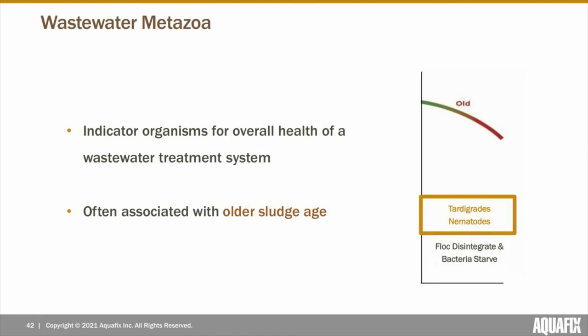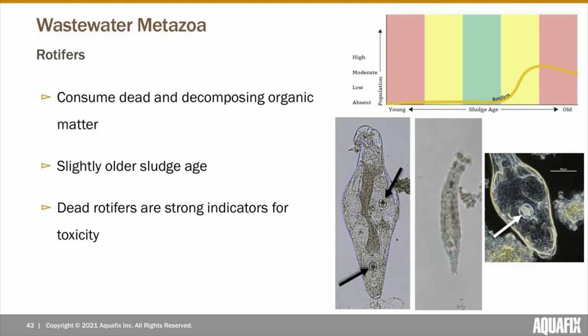In comparison to protozoa, metazoa are more complex but still used as indicators for overall health. They're often associated with older sludge ages because they have a slower growth and development period. Rotifers are a diverse type of metazoa that come in many shapes and sizes. Some rotifers have a funnel-like structure with cilia on the front of their body that resembles rapidly revolving wheels. Rotifers feed on dead and decomposing matter, as well as bacteria, algae, and smaller protozoa, helping produce a clear effluent. All rotifers have a mastax, which aids in eating and digestion.